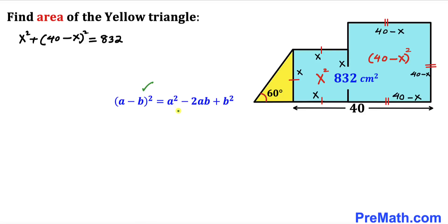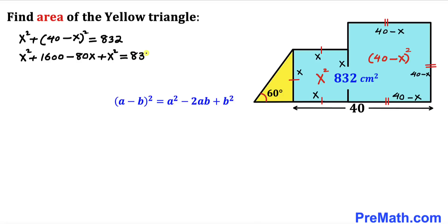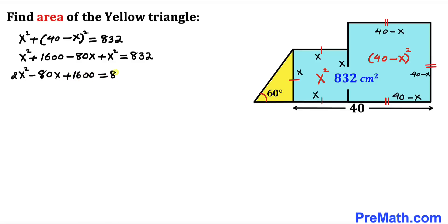Let's recall the identity: (a minus b) squared equals a squared minus 2ab plus b squared, and apply it to (40 minus x) squared. The left hand side becomes x squared plus 1600 minus 80x plus x squared equals 832. Combining like terms gives 2x squared minus 80x plus 1600 equals 832. Subtracting 832 from both sides gives 2x squared minus 80x plus 768 equals 0.